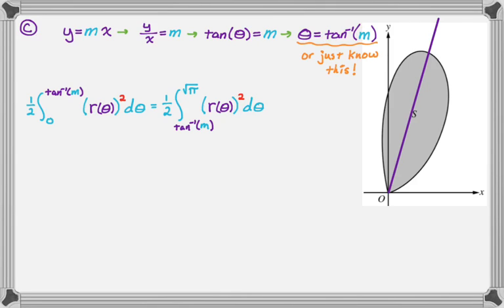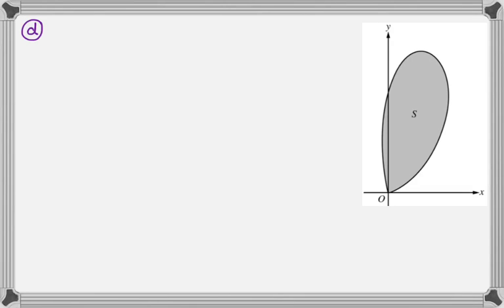All right, let's take a look at the last part. The last part's actually a little weird. So for k greater than zero, we're going to let A of k be the area of the portion of region S that is also inside the circle r equals k cosine of theta. And we want to find the limit as k approaches infinity of A of k.